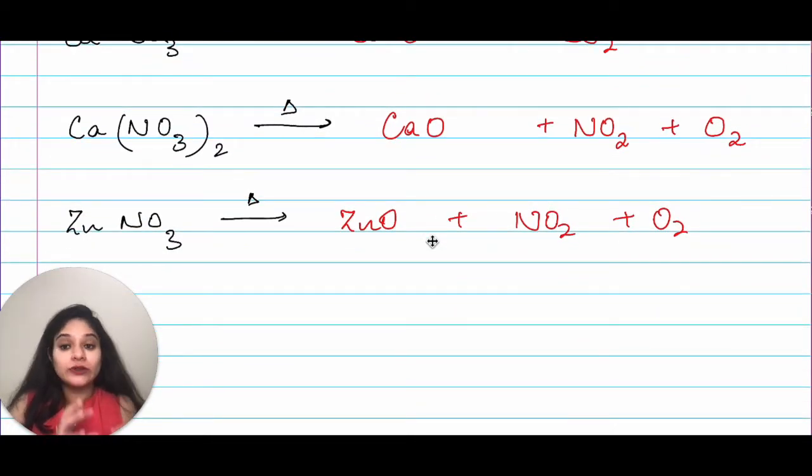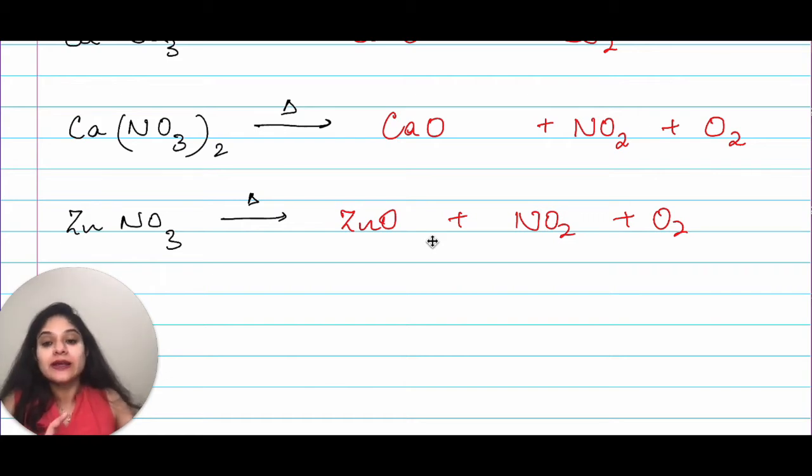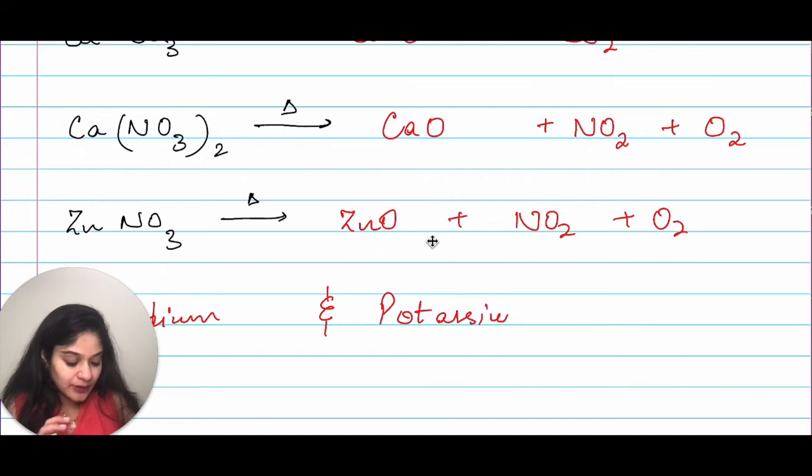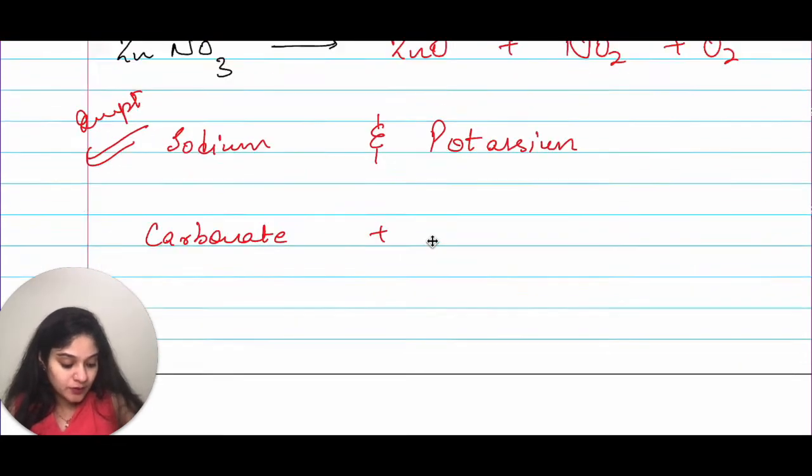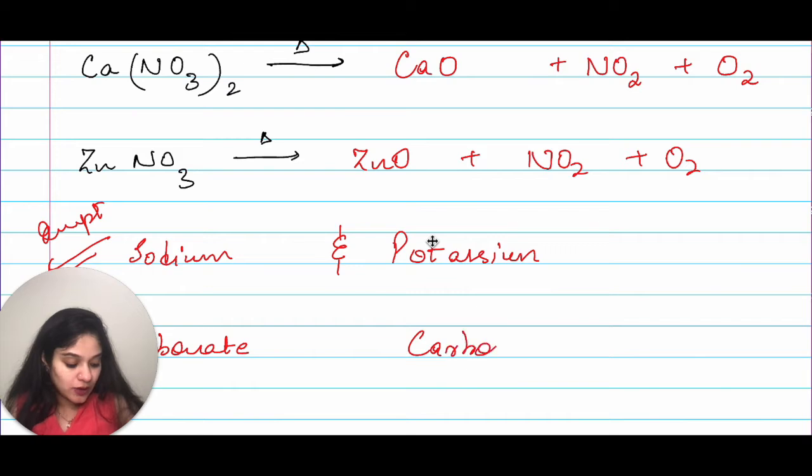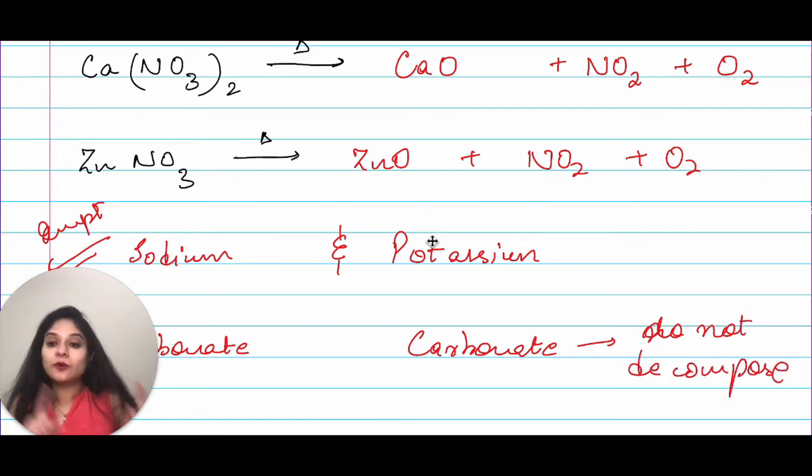There is some exceptional cases here. One thing that you have to understand is that not all nitrates will give you the same products when we heat them. And this we will do in detail when we are doing the chapter nitric acid. For now just look at these couple of examples and couple of exceptions that we have but the details we will do in nitric acid. So, let me write sodium and potassium. This is important. So, what we can learn in this is that sodium carbonate and potassium carbonate. These do not decompose on heating.